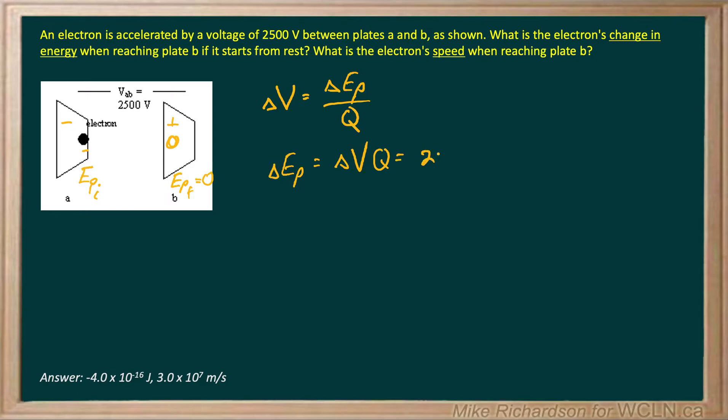Our change in voltage is 2500, and Q is the charge of an electron, which is negative 1.6 times 10 to the negative 19 coulombs. When we put all that together, we get negative 4.0 times 10 to the negative 16 joules.